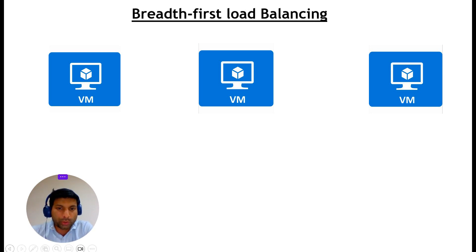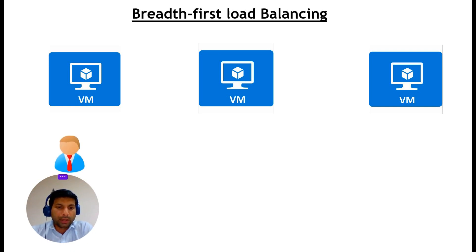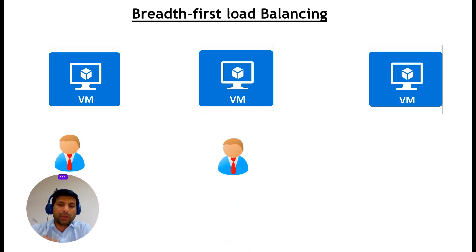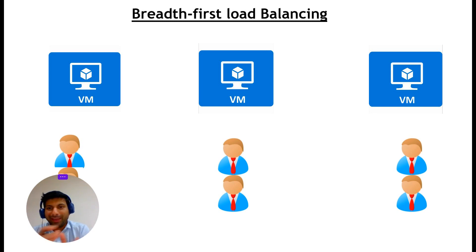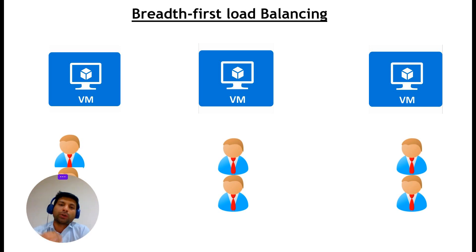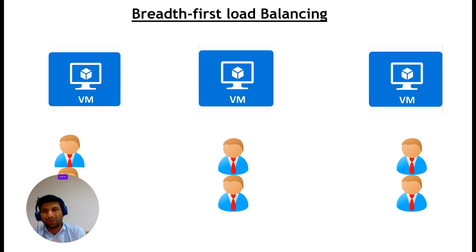In breadth-first load balancing, new connections are distributed across all available session hosts evenly. For example, when a new user logs in they connect to the first host machine, then the next user goes to the second host, and the third to the third host. When the fourth user comes, it cycles back to the first, then the second, then the third — distributing the hosts evenly. We can set a maximum number of connections per session host on the host pool, which will stop new connections if the maximum session limit is reached. However, the maximum session limit is not required for breadth-first host pools.